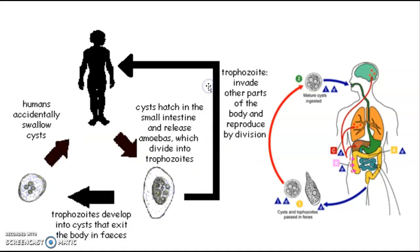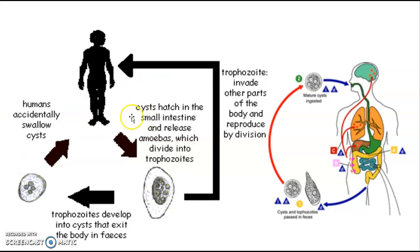Remember: trophozoites develop into cysts that exit the body in feces, and it is the cyst that is the main infective stage. The cyst causes infection in healthy humans. When the cyst reaches the small intestine and then the large intestine, it invades the colon and may enter the bloodstream, potentially damaging vital organs like the brain, lungs, and liver. Trophozoite is the non-infective stage; cyst is the infective stage.